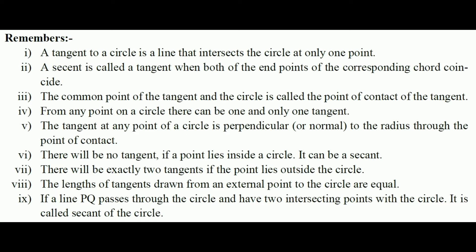That means when a point lies on the circumference of the circle, we can draw only one tangent line. Point 5: The tangent at any point of a circle is perpendicular to the radius drawn through the point of contact.